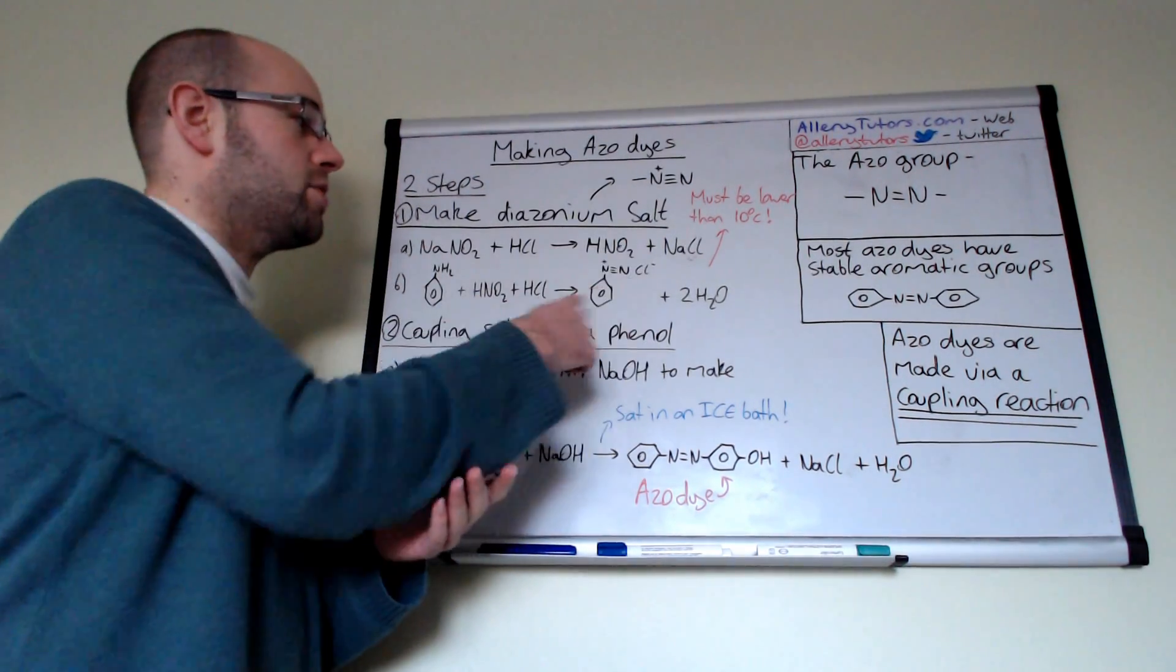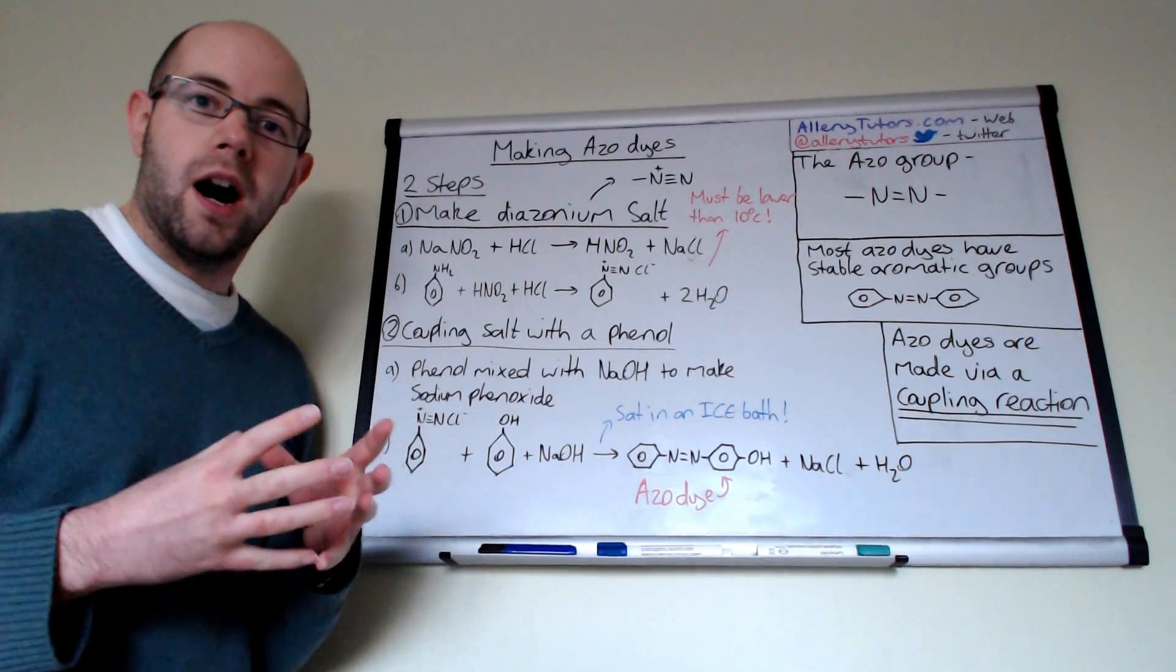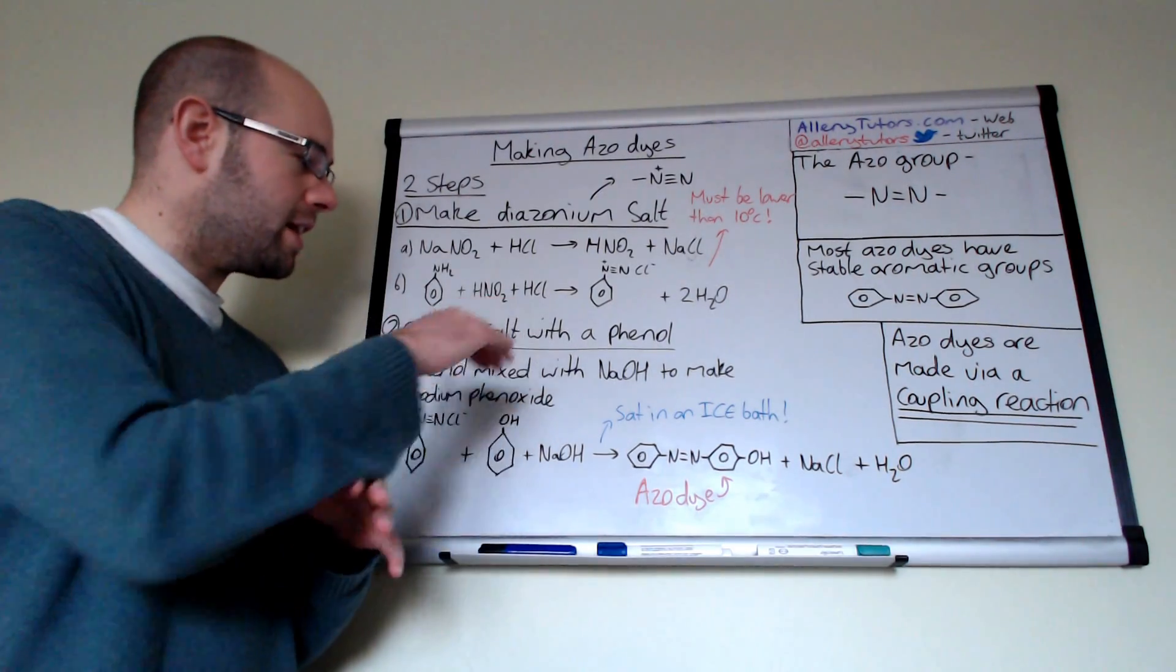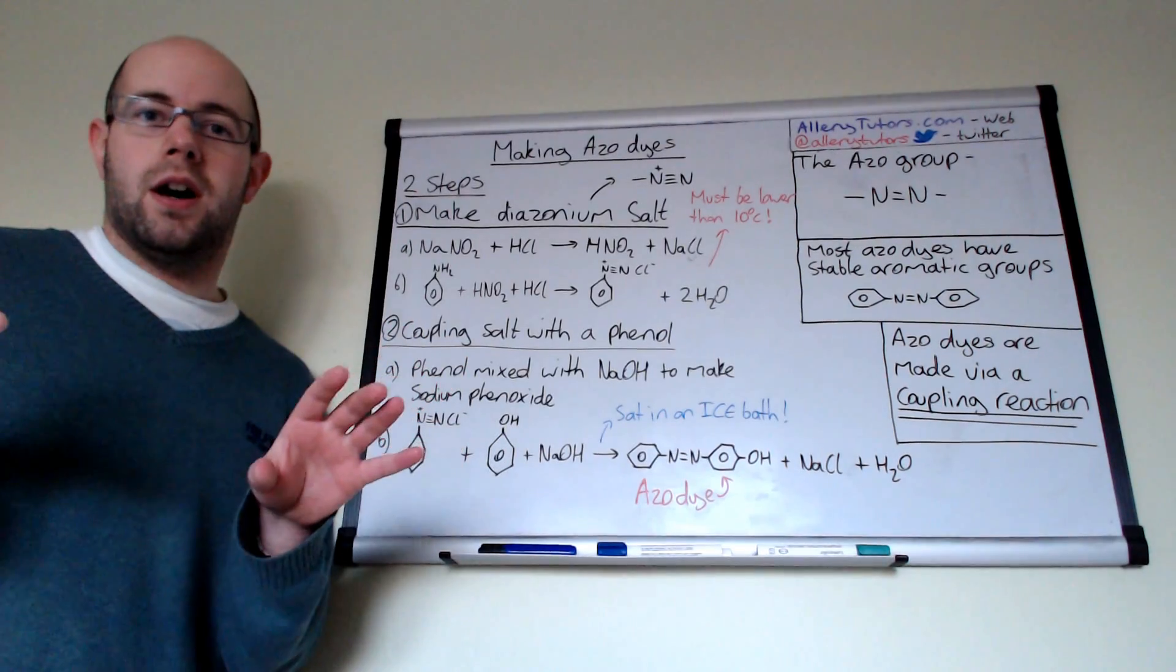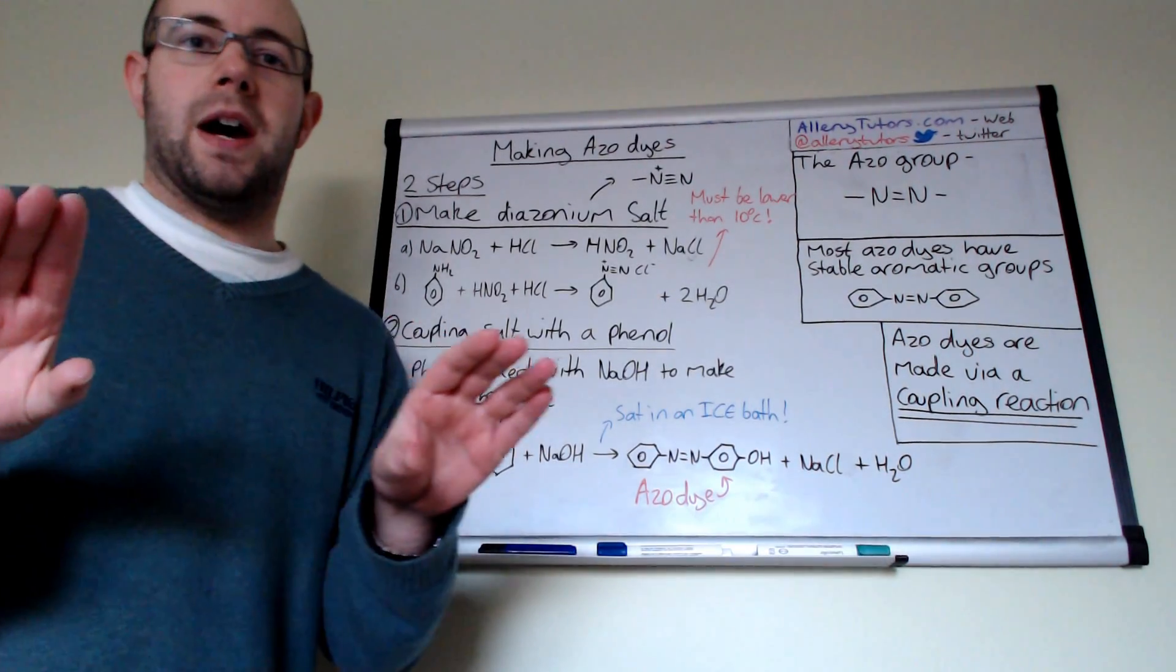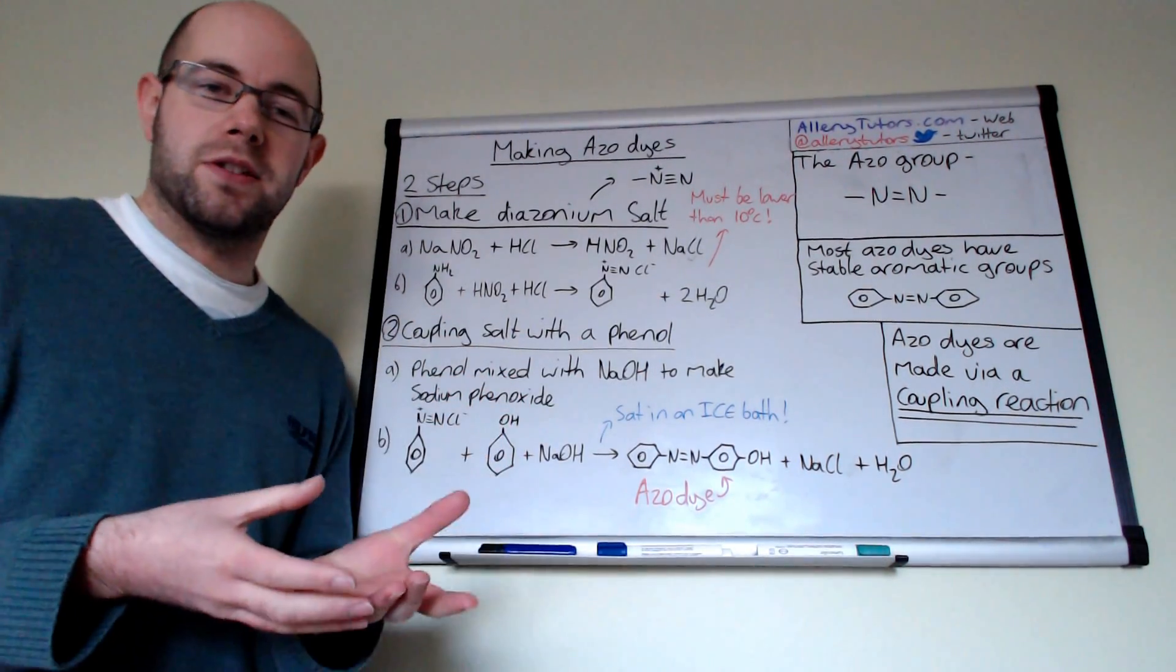Once you've got your diazonium salt, you've actually made half of your dye. The second step is the coupling step, so this is where we actually take two parts of this molecule and we're going to join these molecules together to form your azo dye.